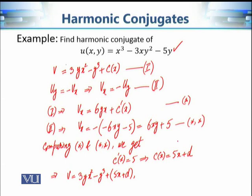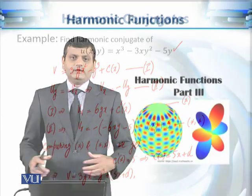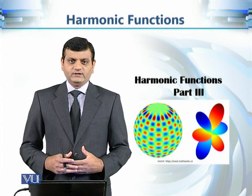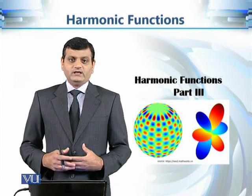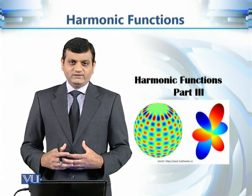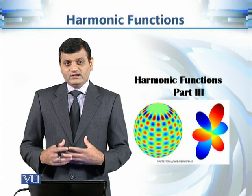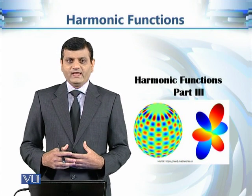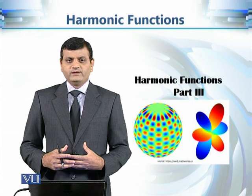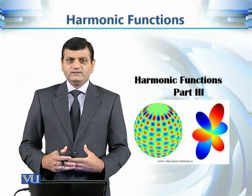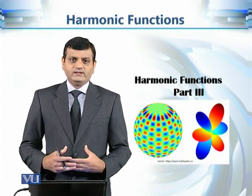That's how we find the harmonic conjugate of a given real-valued function of two variables. This is the end of our discussion on harmonic functions. We have seen how, given a harmonic function, we can find its harmonic conjugate. This calculation helps us construct analytic functions: starting from any given harmonic function, we find its harmonic conjugate, and together they give us the real and imaginary parts of an analytic function.